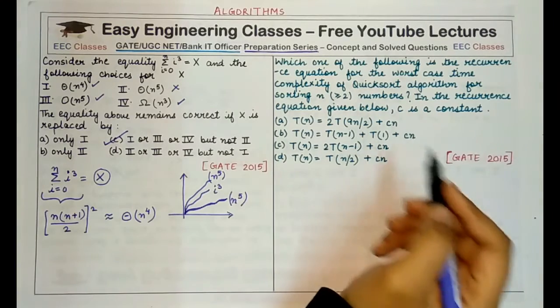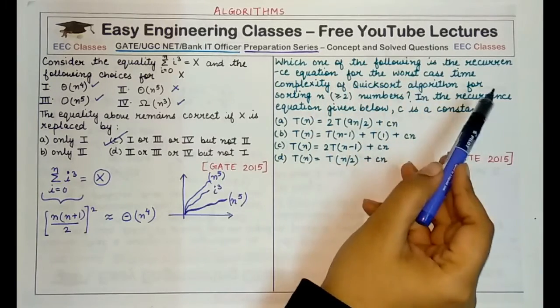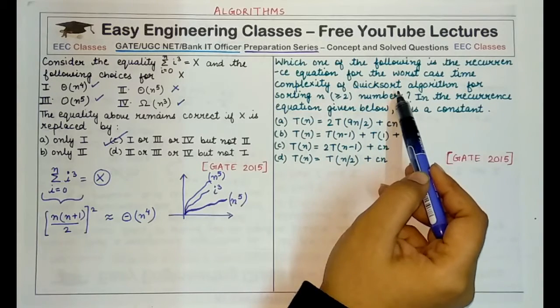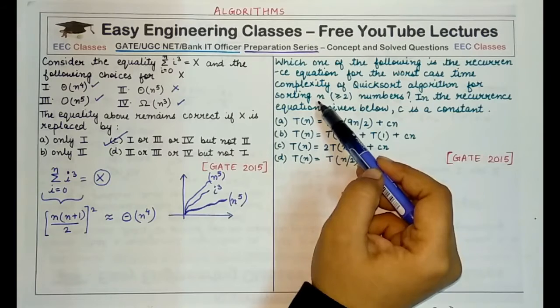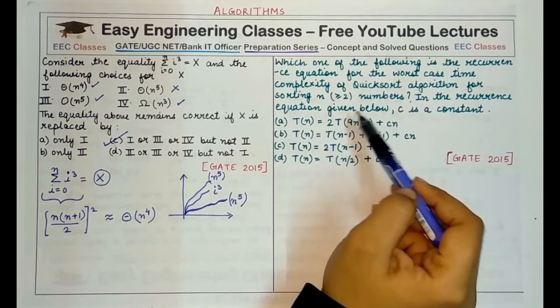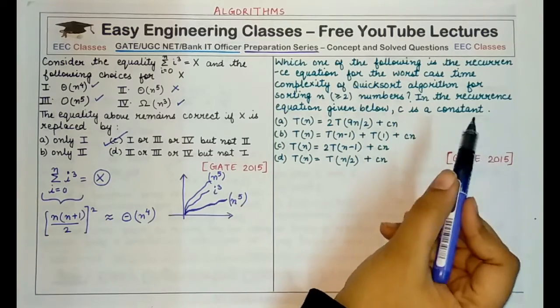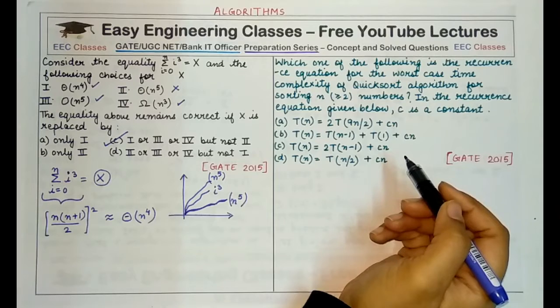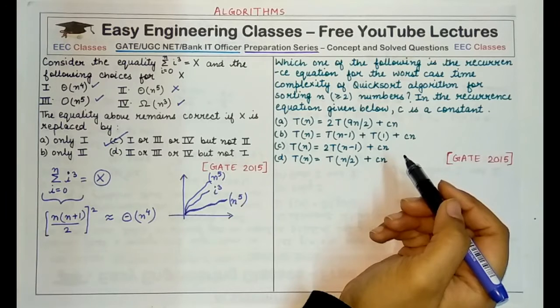Coming to the second question, which one of the following is the recurrence equation for the worst case time complexity of quicksort algorithm for sorting n numbers where n is greater than or equal to 2, C is a constant. Worst case of quicksort occurs when the current problem is reduced by one or a single element, or we can say that the worst case occurs when the recursive call that is made has the sub problem of size that is one less than the size of the current problem.